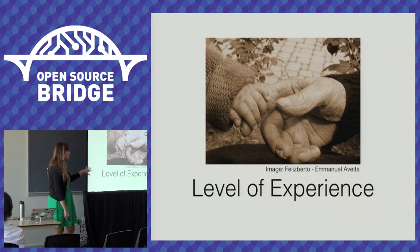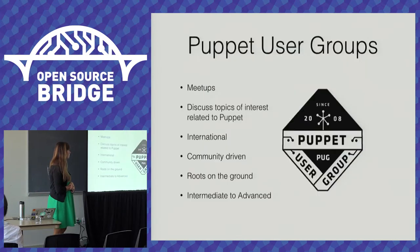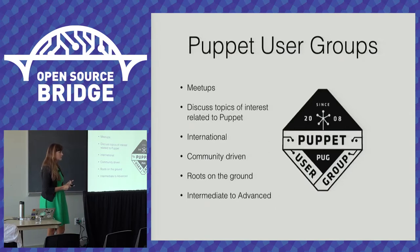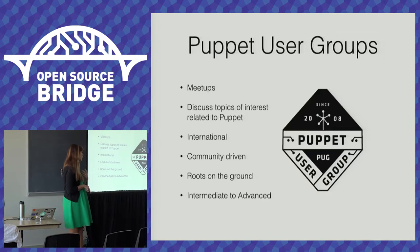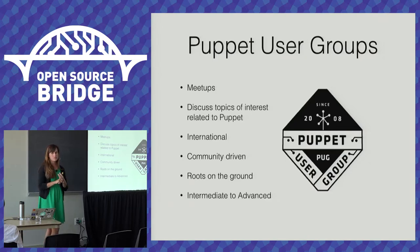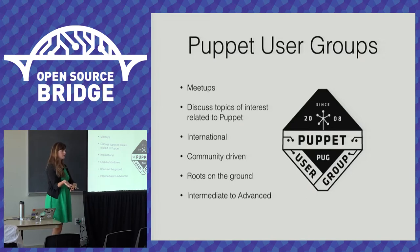Going into detail about how we include level of experience in our events: our Puppet user group program consists of community-organized meetups — typical meetups talking about topics related to Puppet, with speakers, all over the world. We typically target intermediate to advanced users, with resources for beginners, and we encourage speakers to provide resources for beginners as well.